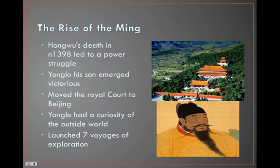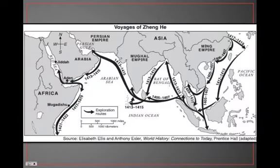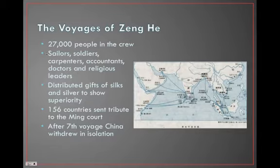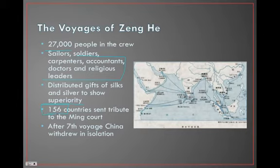Hong Wu's death led to a power struggle — Yong Lo taking over. Here are the voyages; you can see how far they got. There are authors who believe they got as far as America. Zheng He had as many as close to 30,000 people in his crew and all types of people with him — flexing their muscles. The 156 number is controversial because it counts tribes and things like that, so 156 groups sent tribute.